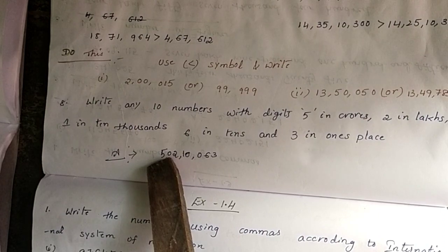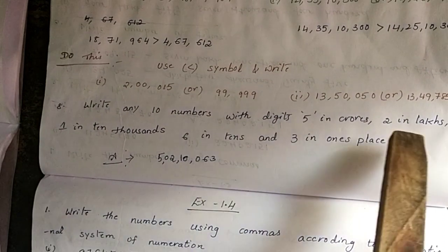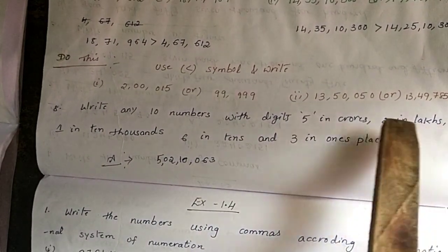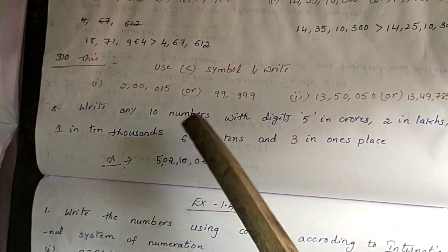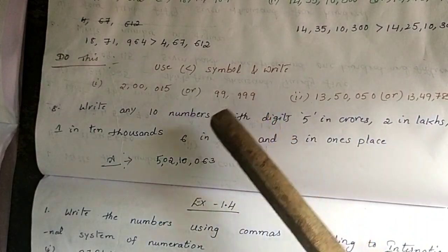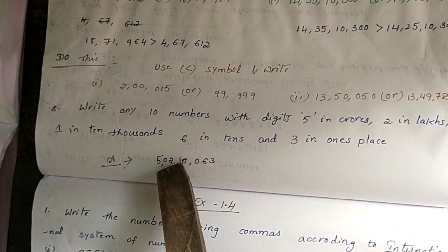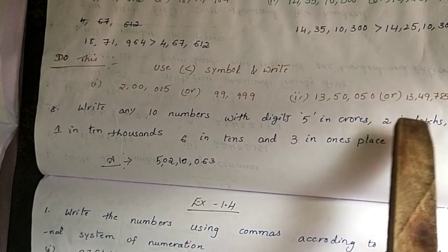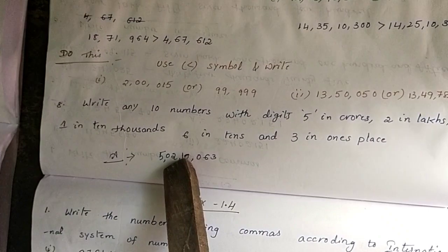After the 0 placeholder, we place 2 in lakhs. Before the lakhs place comes 10 lakhs, so after placing 0 there, we write 2 in the lakh place.